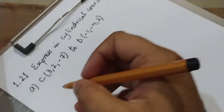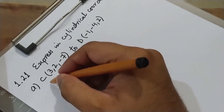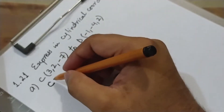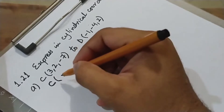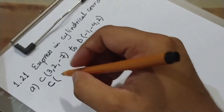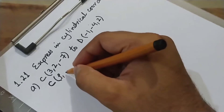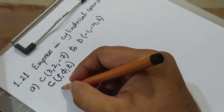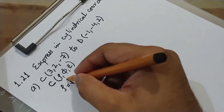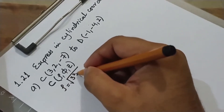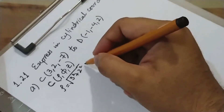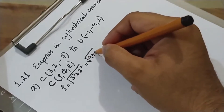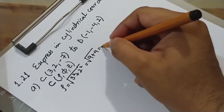What we did was convert point C's coordinates (the tail) from Cartesian to cylindrical coordinate system. We need rho, phi, and z. Rho is under root of x² + y², which in this case is √(9 + 4) = √13.